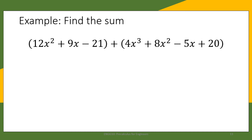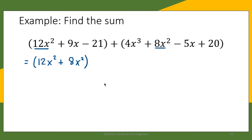The first step is to combine like terms. The first polynomial has the term 12x squared. We need to combine this with the term 8x squared from the second polynomial, so we have 12x squared plus 8x squared. Next, the first polynomial has 9x and the second has negative 5x, so we combine them: 9x minus 5x.